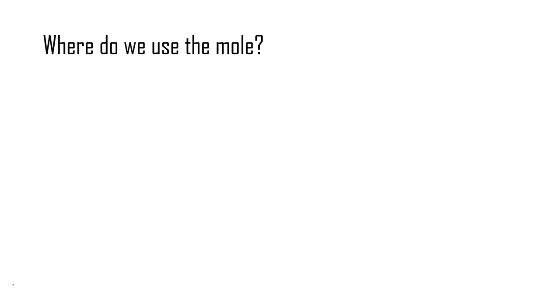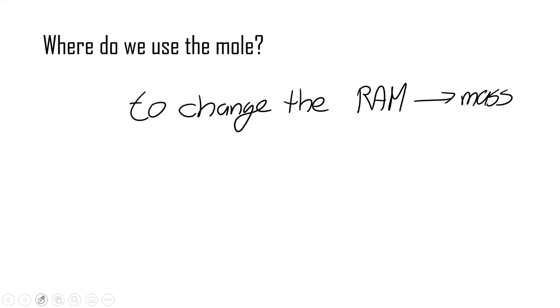And pretty much we change the RAM into grams. So where do we use it? To change the RAM into mass. So the RAM is something that is microscopic. We cannot see it. Whereas the mass, it is macroscopic. The mass is macroscopic. Something that we can see.